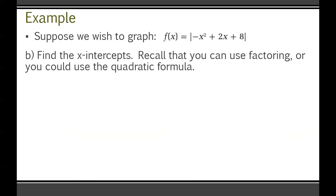Step B: find the x-intercepts. We can use factoring or the quadratic formula. Since there's a negative in front of x², this is an adapted sum-product rule question, where sum is the middle coefficient and product is the first coefficient times the last. So we're looking for two numbers with a sum of positive 2 and a product of negative 1 times 8, which is negative 8. Those numbers are positive 4 and negative 2.